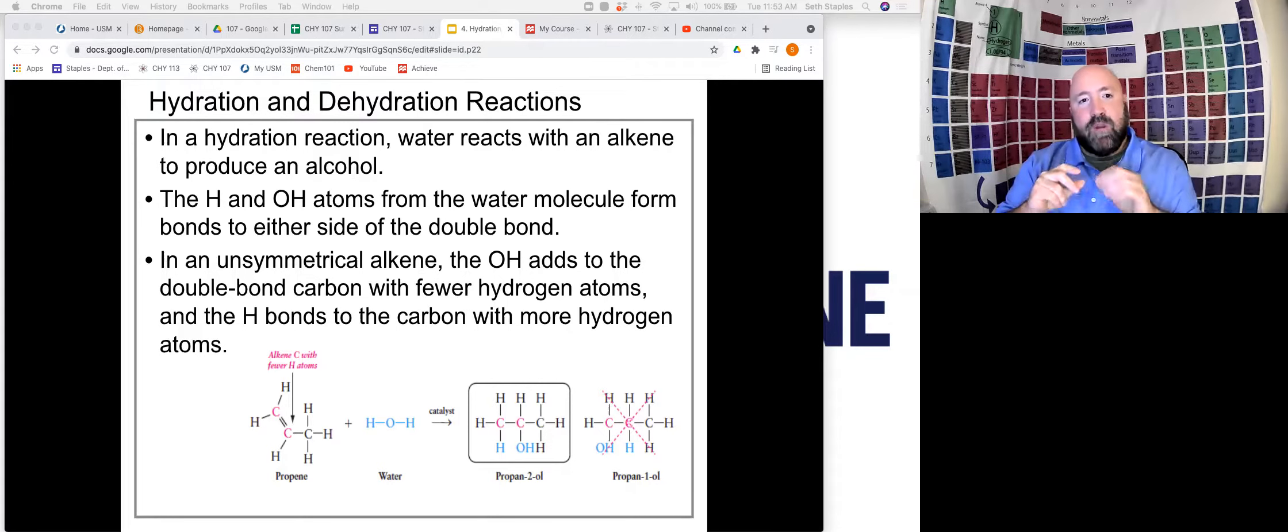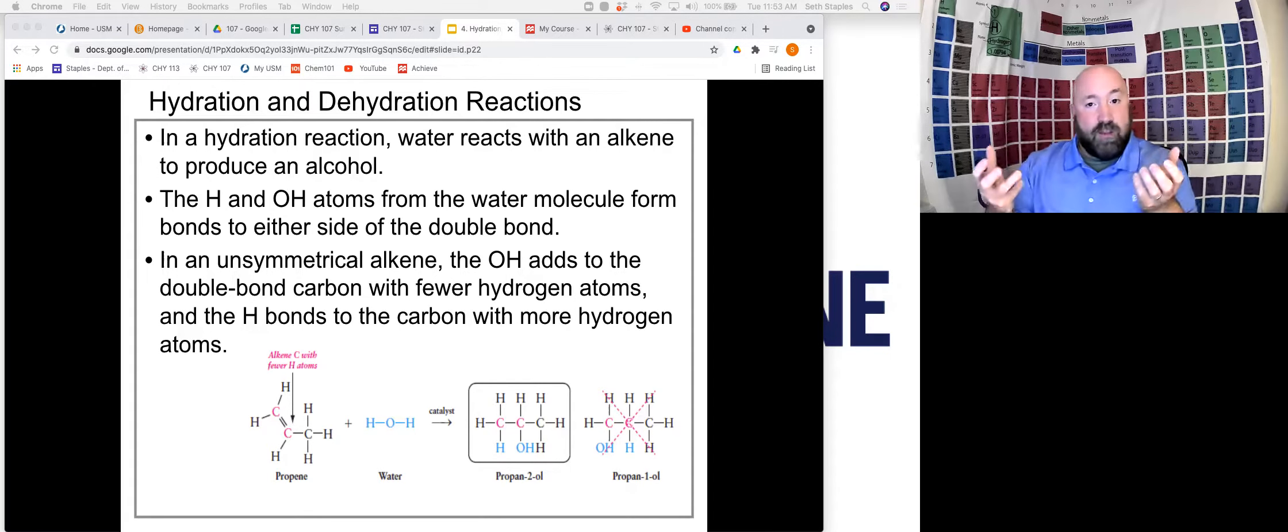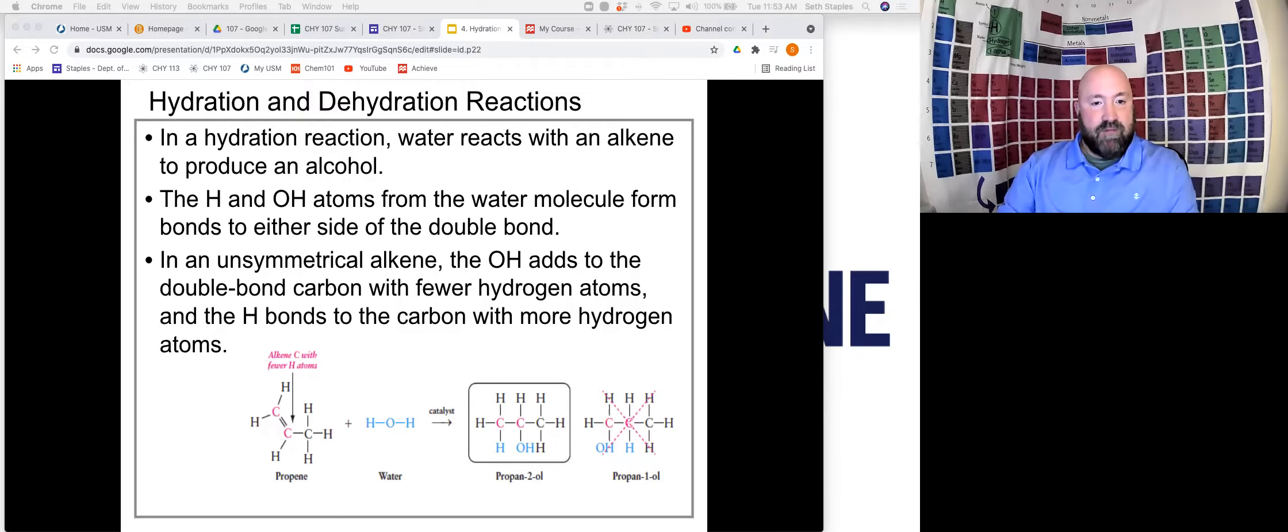In a hydration reaction, water is going to react with an alkene in order to produce an alcohol. And so what happens there is the H and the OH from the water molecule end up attaching to the carbons on either side of the double bond. And so we can see that happening here. Here we have an alkene, here's propene. And what's going to happen is the H and the OH attach to the carbons on either side of our double bond here.